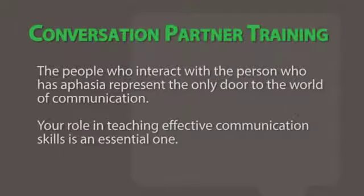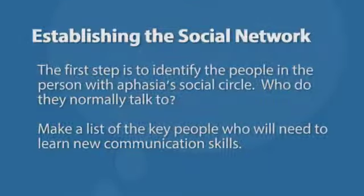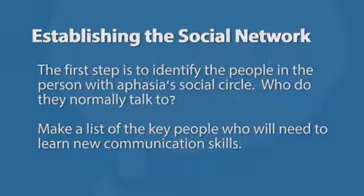Conversation partner training. The people who interact with the person who has aphasia represent the only door to the world of communication. Your role in teaching effective communication skills is an essential one. Establishing the social network: the first step is to identify the people in the person with aphasia's social circle — who do they normally talk to? Make a list of the key people who will need to learn new communication skills.